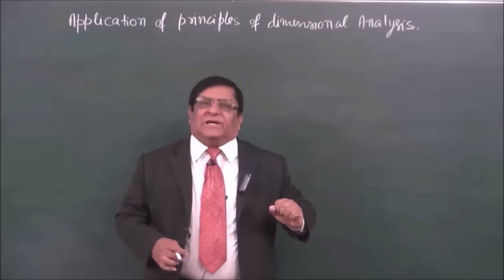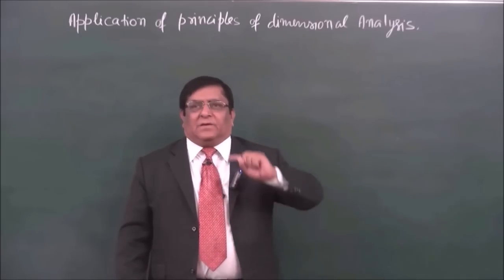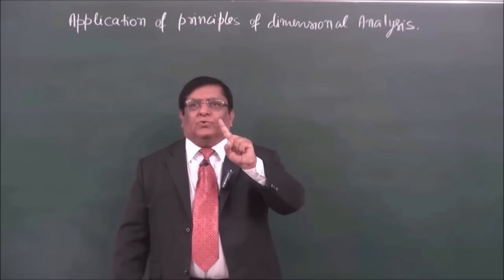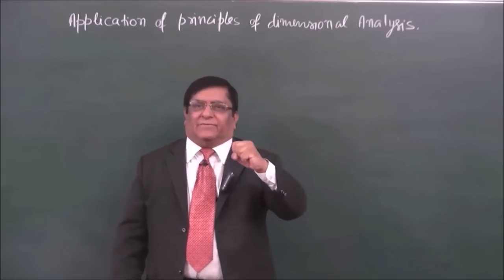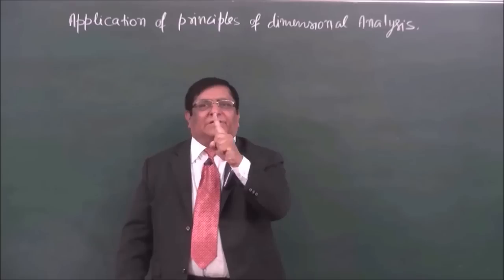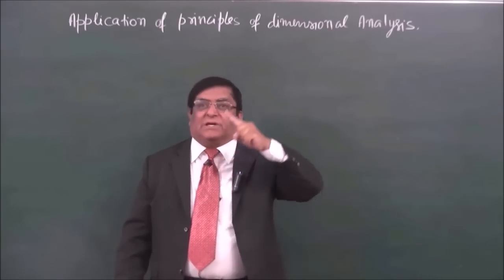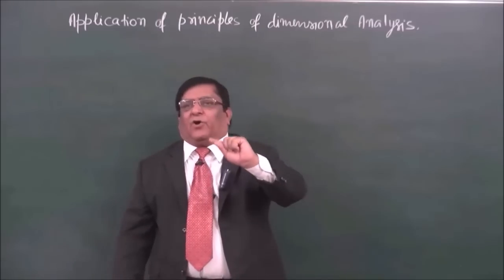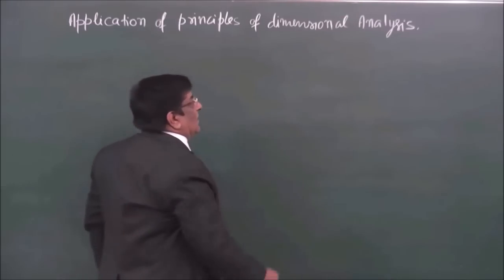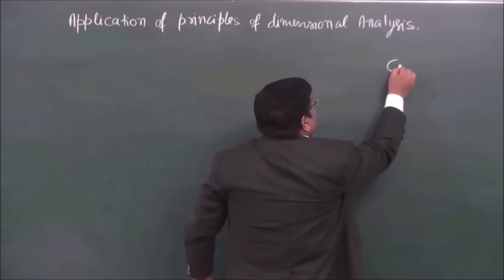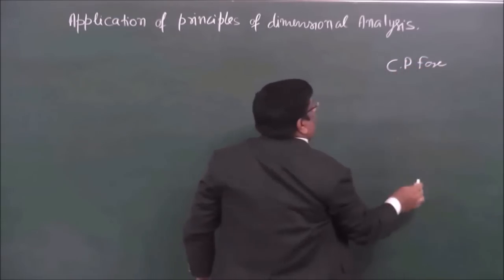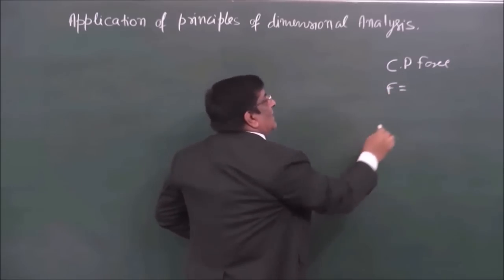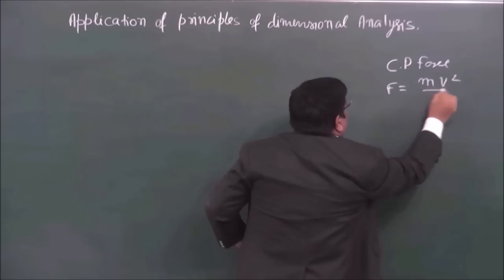We have a formula: if an object is moving in a circle, then there is a force acting on it. We call it centripetal force. The formula is F = mv² upon R.